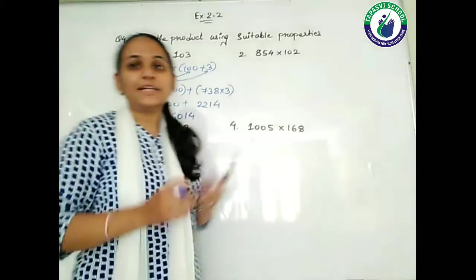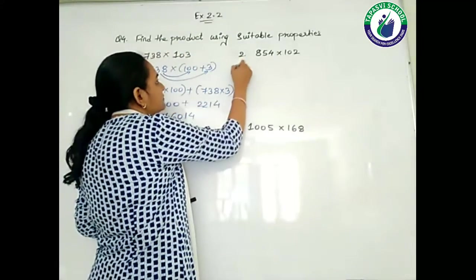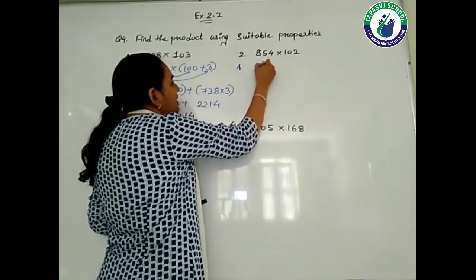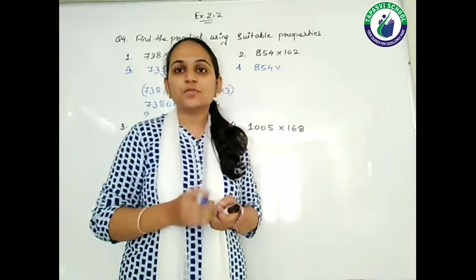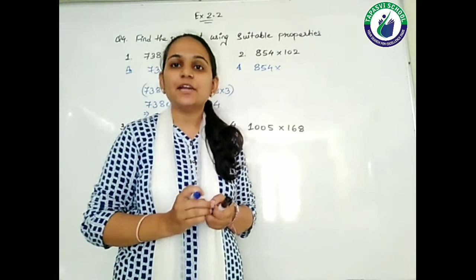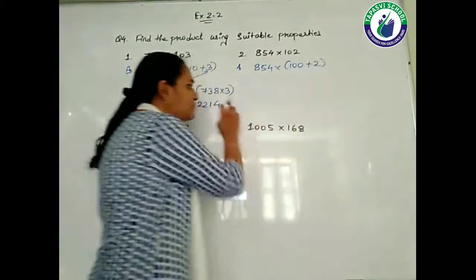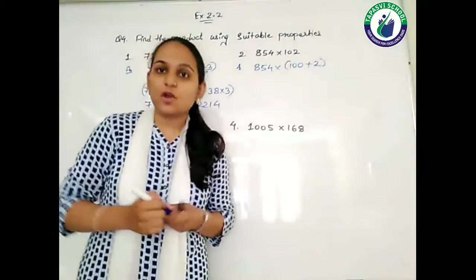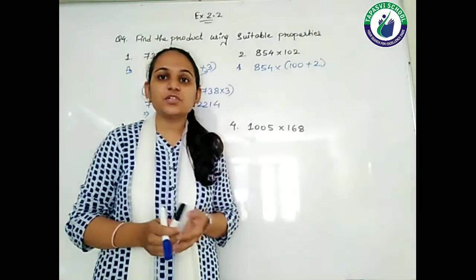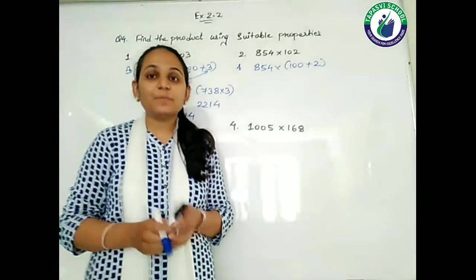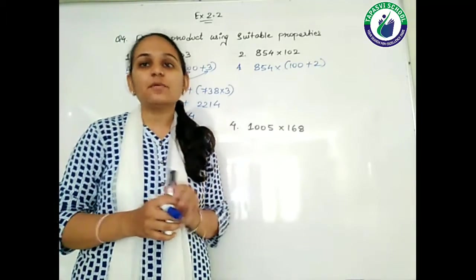Now taking the second question, that is 854 multiplied by 102. Here also, I can write 102 as 100 plus 2. See the property which we have used here — that is the distributive property. Distributive property says distribution of multiplication over addition, meaning you have to distribute them and then add them.